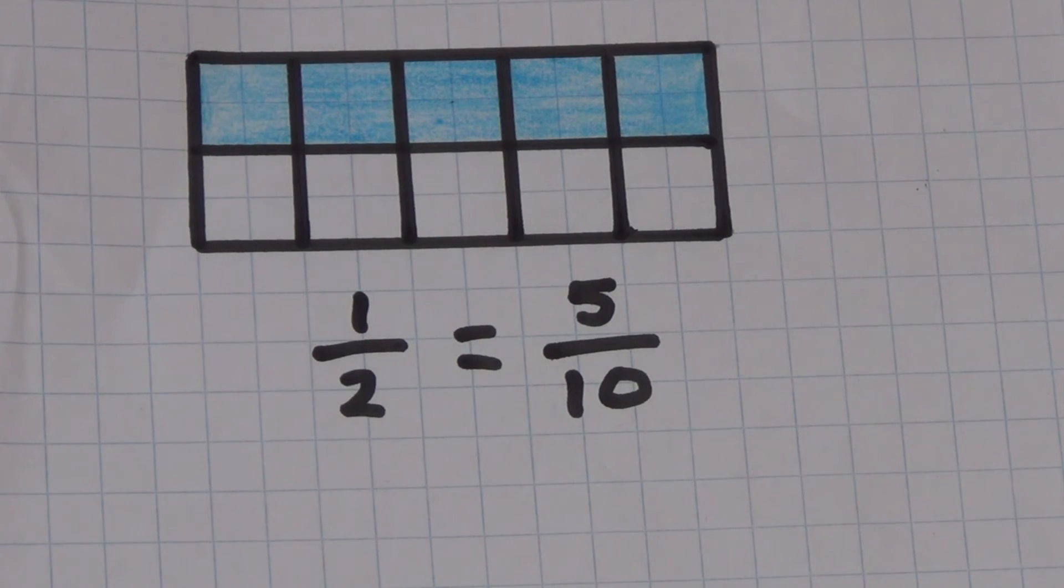One half is equivalent to five-tenths. We can see that with this rectangle I have coloured in a half which is five out of the ten squares. Five is also half of ten.